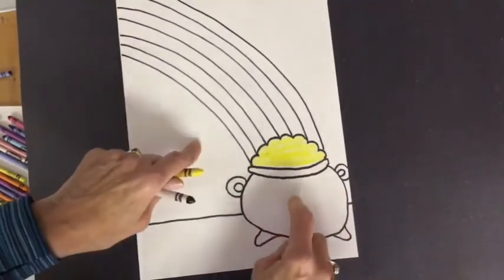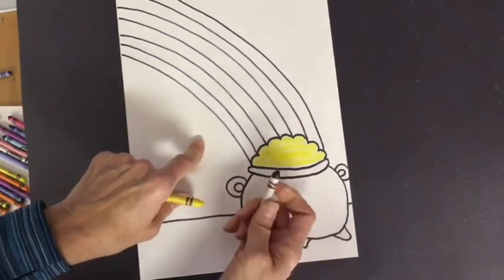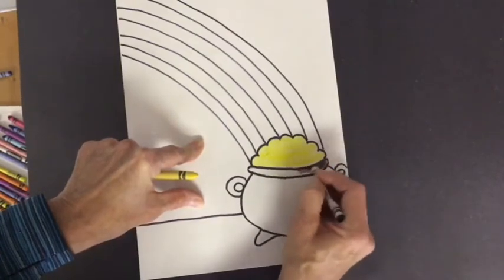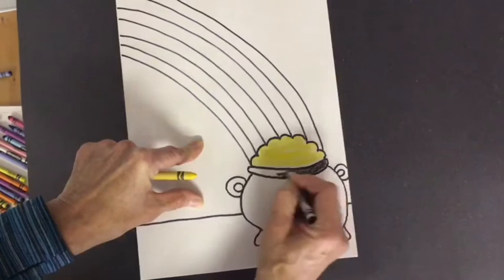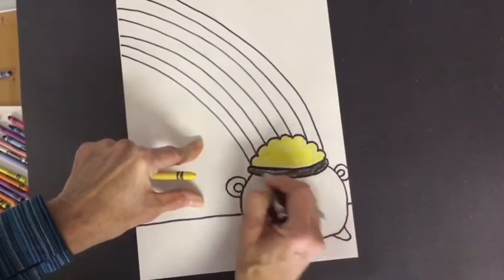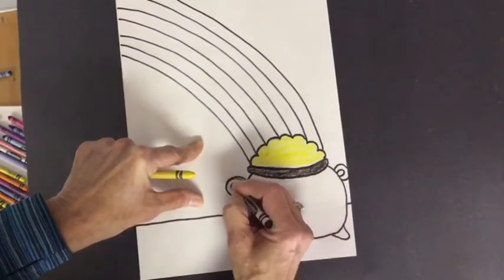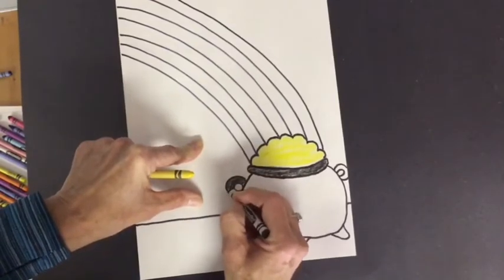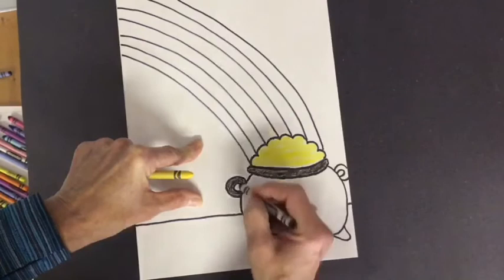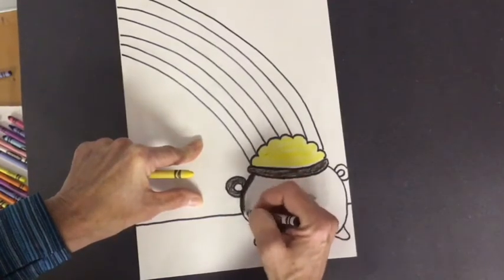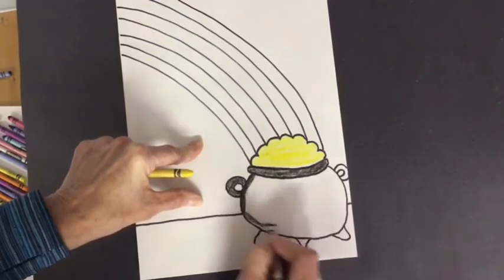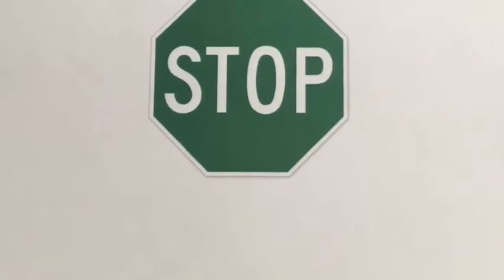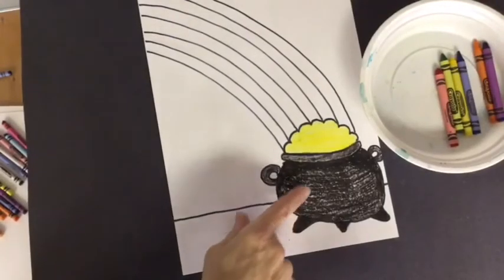The pot is usually made from iron and that'll turn black. So I'm going to take my black crayon and I'm going to carefully color in this whole pot that holds the gold. And it's the pot at the end of the rainbow. I'm even going to carefully color these handles that go with the pot. And I will also color the feet down at the bottom. So let me give you some time to do that.